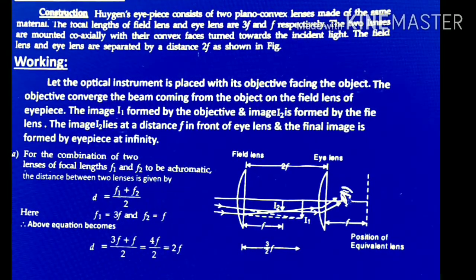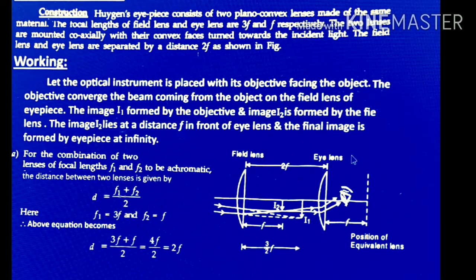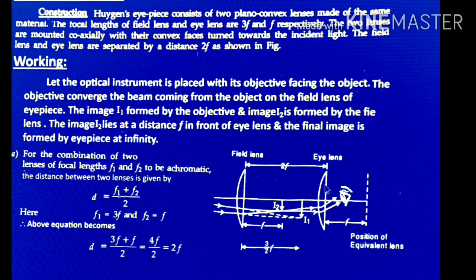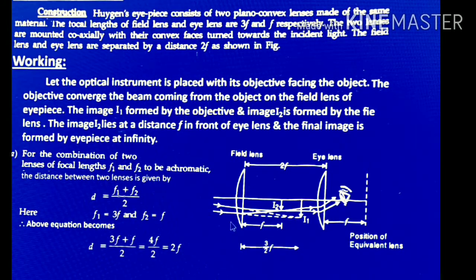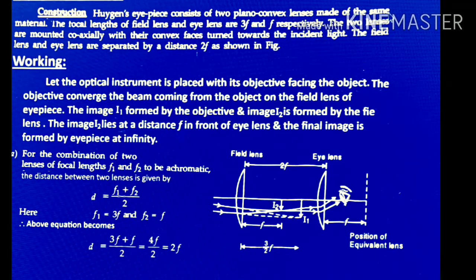One lens is the field lens and the other is the eye lens. These lenses are made of the same materials. They are two plano-convex lenses — plano-convex means one side is flat and the other side is converging. Now look at the construction: the Huygens eyepiece consists of two plano-convex lenses made of the same material.